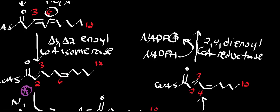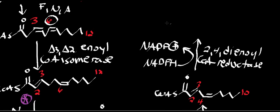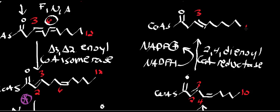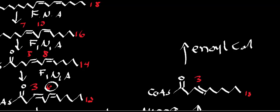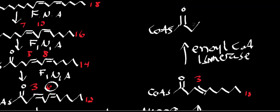The product of the 2,4-dienoyl-CoA reductase reaction: the enzyme reduces both double bonds and combines them into one, giving a trans double bond at position 3 — with carbon 10 at the end, so we have 10 carbons. Then enoyl-CoA isomerase moves the double bond to the correct position between the alpha and beta carbons — carbon 2 and carbon 3 — producing an enoyl-CoA that you'd recognize from normal beta-oxidation.